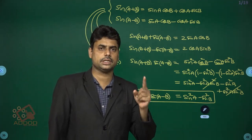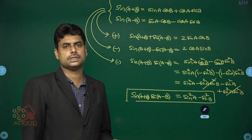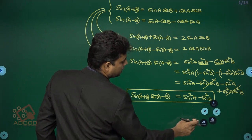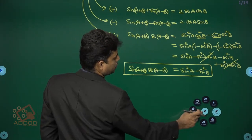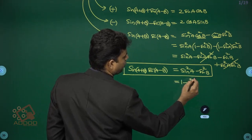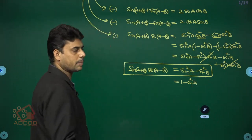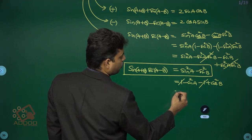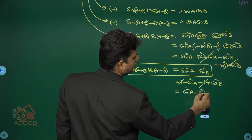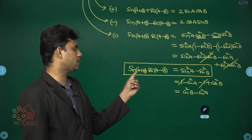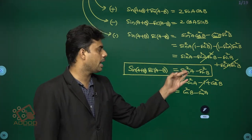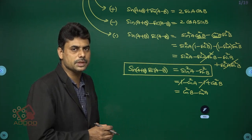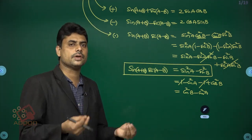Now applying the same procedure for cosine. cos(a+b) = cos a·cos b - sin a·sin b, and cos(a-b) = cos a·cos b + sin a·sin b. Adding these two gives 2·cos a·cos b, and subtracting gives cos(a-b) - cos(a+b) = 2·sin a·sin b.